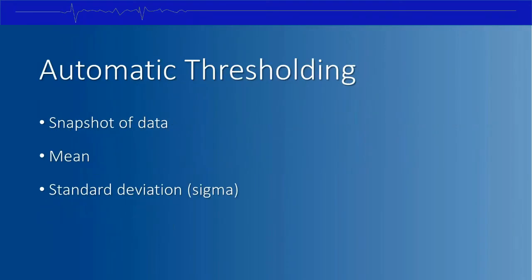We can also talk about automatic thresholding. It is possible to set the threshold automatically, which is often more useful than manual thresholding. This is done by first taking a snapshot of continuous spike data — think of a snapshot as a brief snippet of data for calculations. By default, once a snapshot is available the software calculates a mean and standard deviation of the signal.